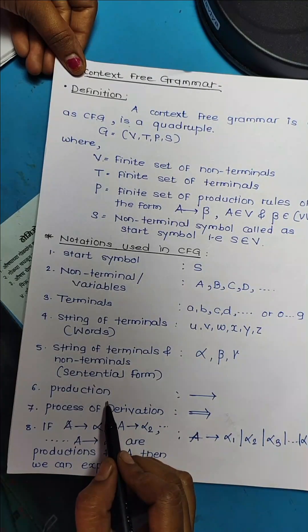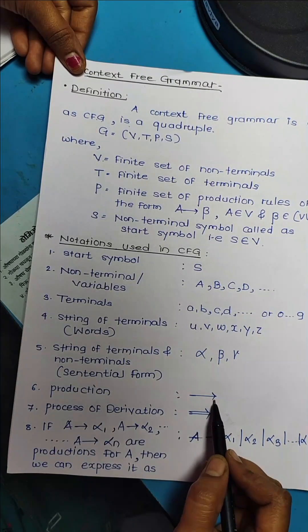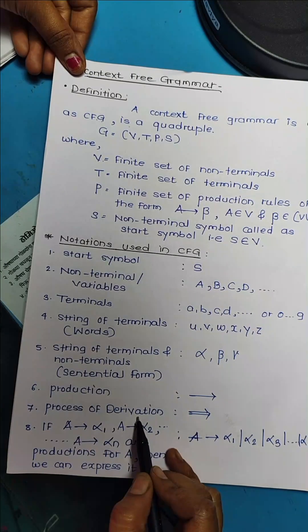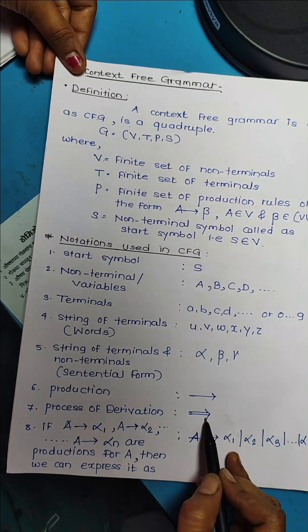Then, production is represented using an arrow. Next, the process of derivation can be represented using this type of arrow.